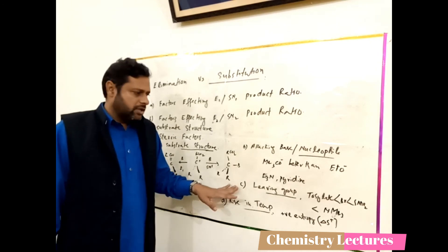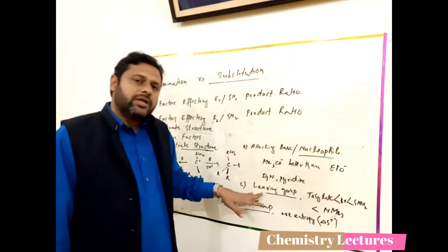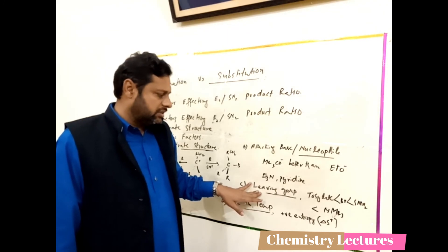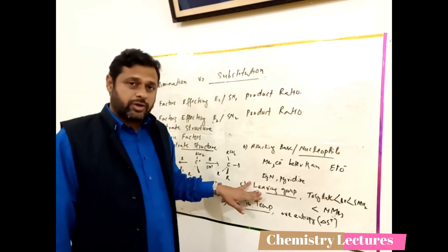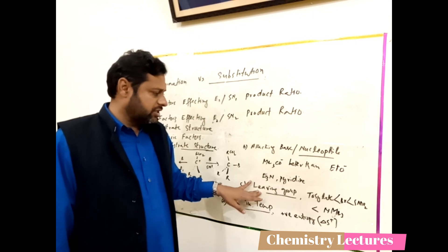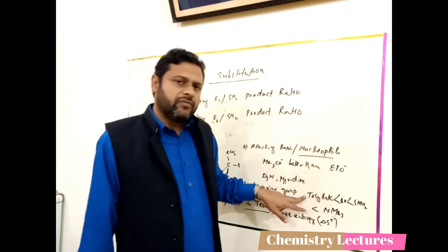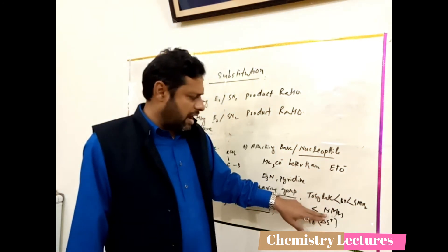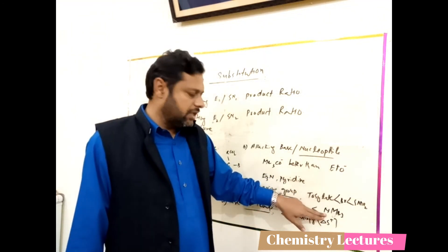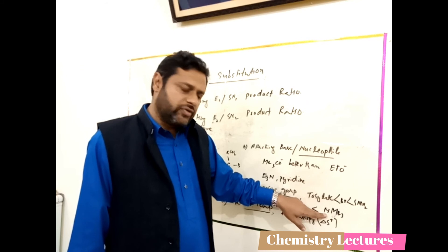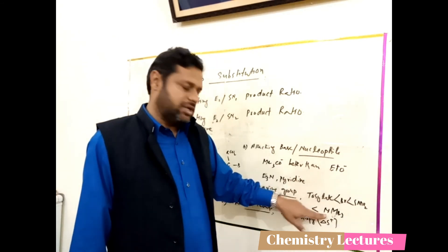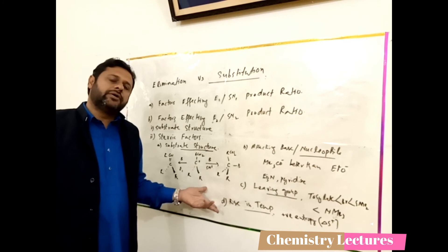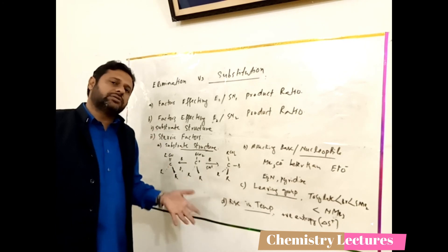The third steric factor is the leaving group. If the leaving group leaves very easily, it gives a substitution product; otherwise, elimination is favored. For example, tosylate gives less elimination product, then bromine, then iodide, and a bulky leaving group gives the maximum amount of elimination product.